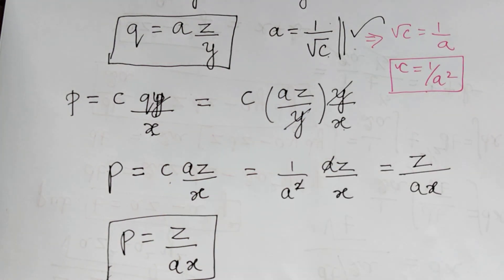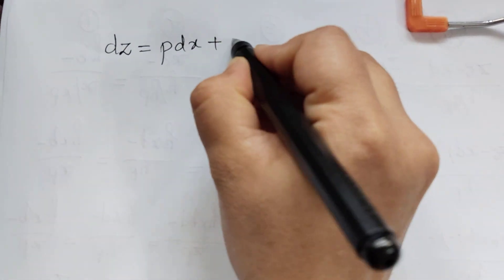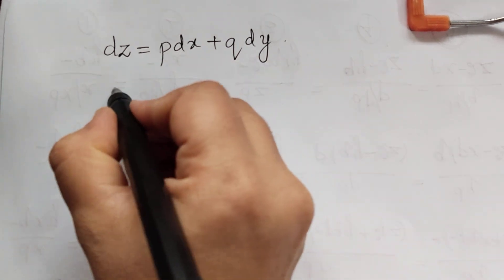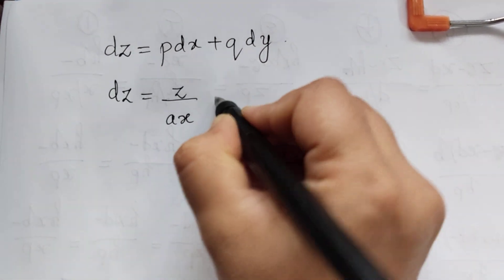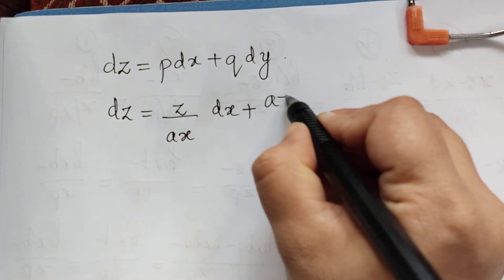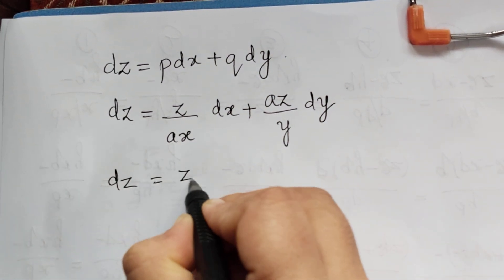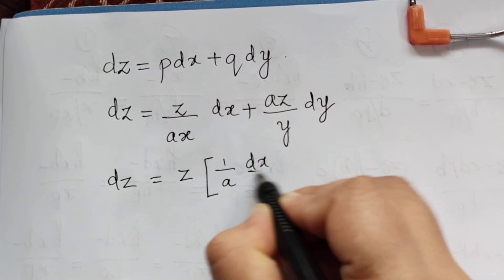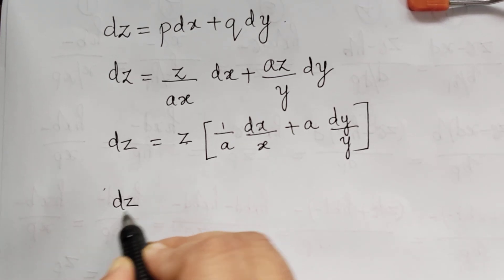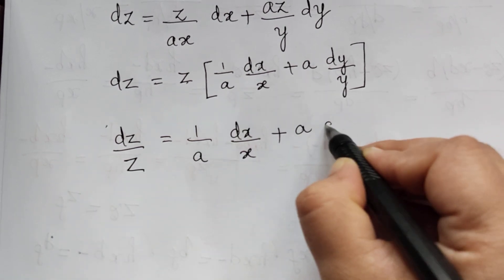We now substitute p and q into dz = p dx + q dy. This gives dz = (z/ax)dx + (az/y)dy. Since z is common on the right, dividing both sides by z: dz/z = (1/a)(dx/x) + a(dy/y).